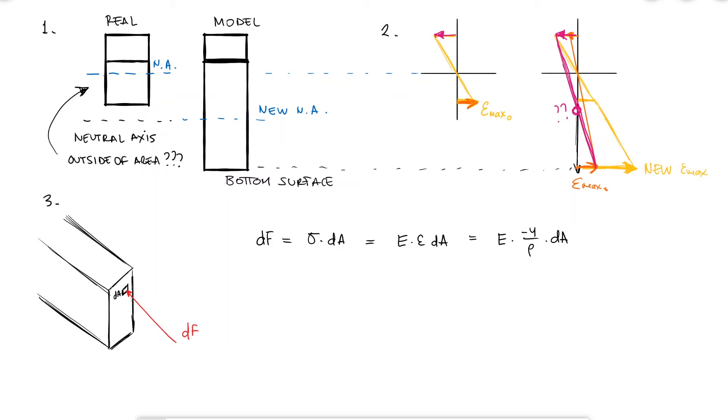Since changing the height causes the neutral axis to move, the value of y would either increase or decrease, changing the value of the infinitesimal force df, which again is not at all accurate.